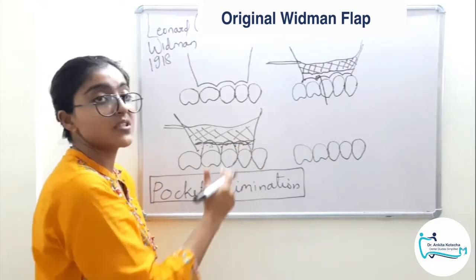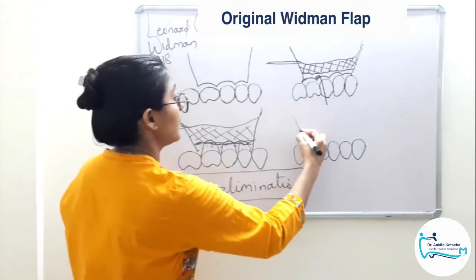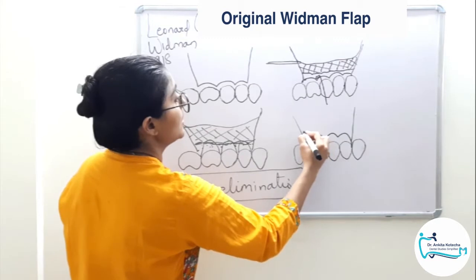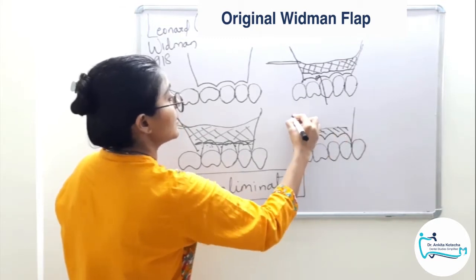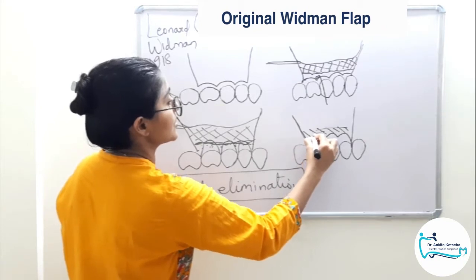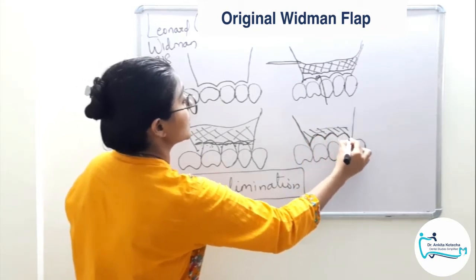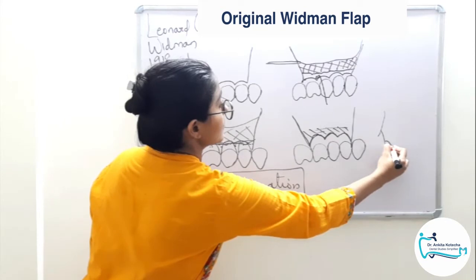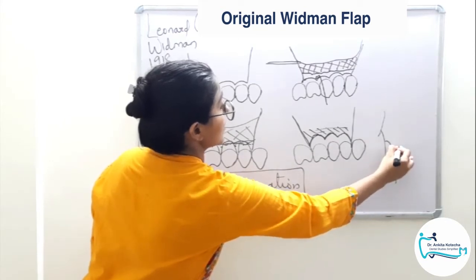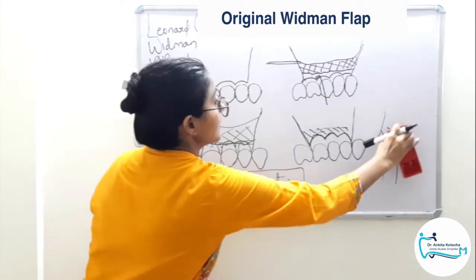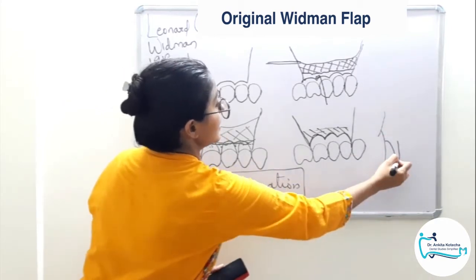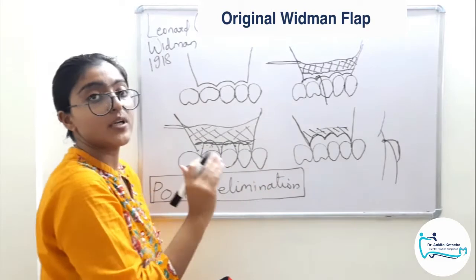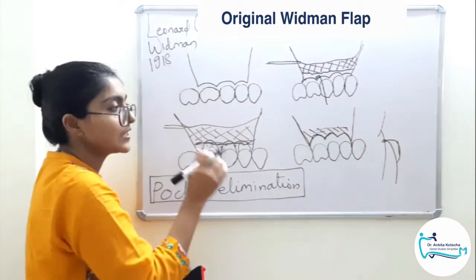Now is the time to place back the flaps — this is the main part. The flaps are placed back in such a position that the flap margin coincides with the level of the bone margins. They are repositioned so that they rest on the alveolar bone, so that there is no scope of pockets. This is how pocket elimination is achieved in this technique.